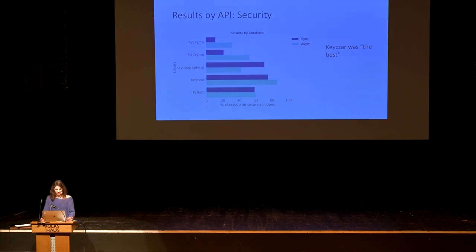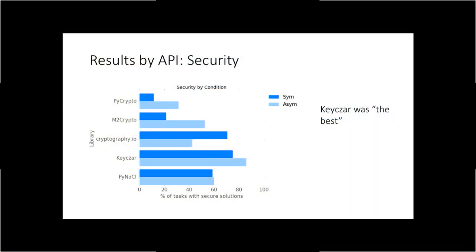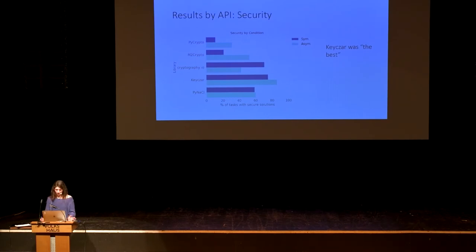Looking at security results by API, Kizar — which had the least functional results — actually had the most secure results out of those that were functional, because we did not evaluate security for unsolved tasks. This is kind of weird, because what do we actually want? The ideal is that everybody solves each task and does so securely, which none of these libraries really achieved. Then the question becomes: is it better to have an insecure working solution, or to have something that simply can't be solved at all? I'm not going to answer that — I'm just noting we have very different results across the field.